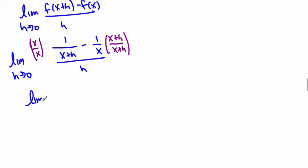So we'll get x minus x minus h, all over x squared plus xh, all over h. Make sure you do that very carefully: x squared plus xh in the denominator.